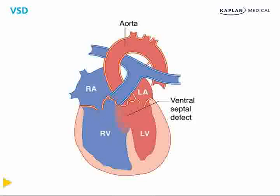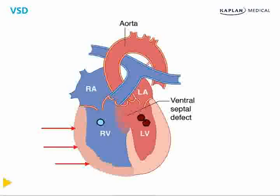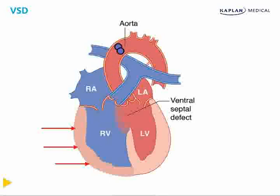Over time, an uncorrected VSD leads to a new syndrome. As blood is constantly shifted left to right, you develop right ventricular hypertrophy. The right side of the heart gets stronger, and the shunt can reverse — from left-to-right to right-to-left — sending partially oxygenated blood to the left side of the heart and then into the systemic vasculature. Less oxygenated blood reaching the organs can lead to growth retardation. This is called Eisenmenger syndrome: an uncorrected VSD that leads to irreversible right-to-left shunting, causing cyanosis and dyspnea during distress.